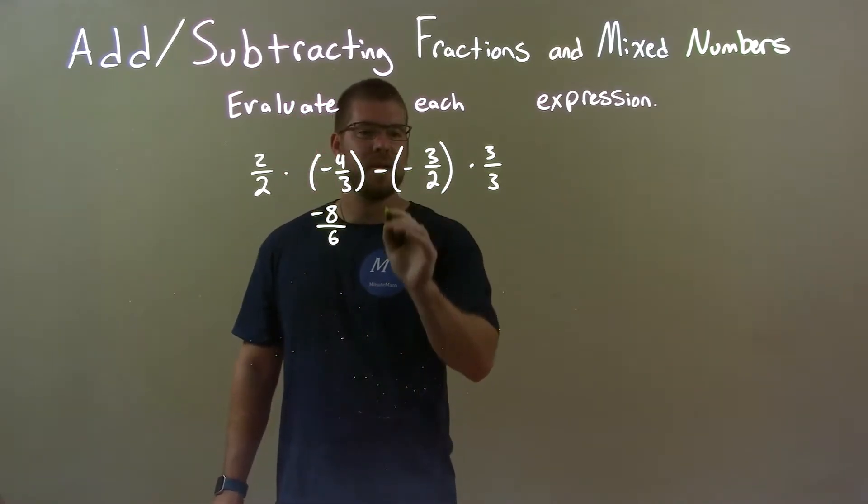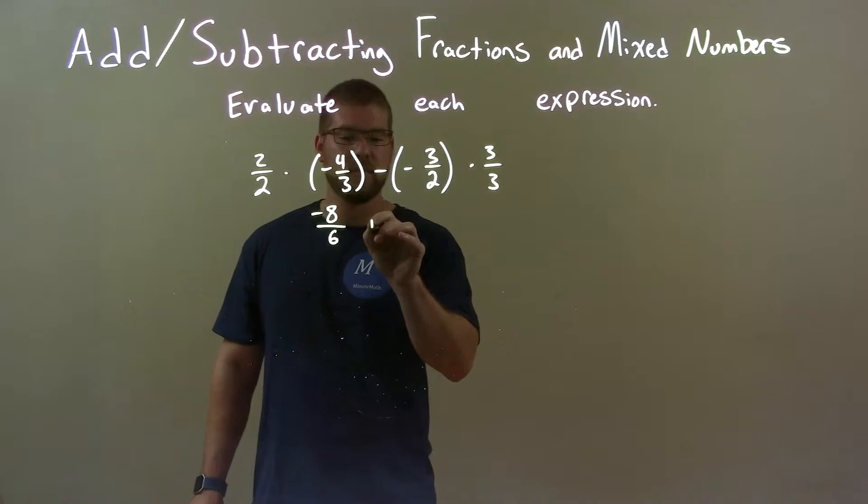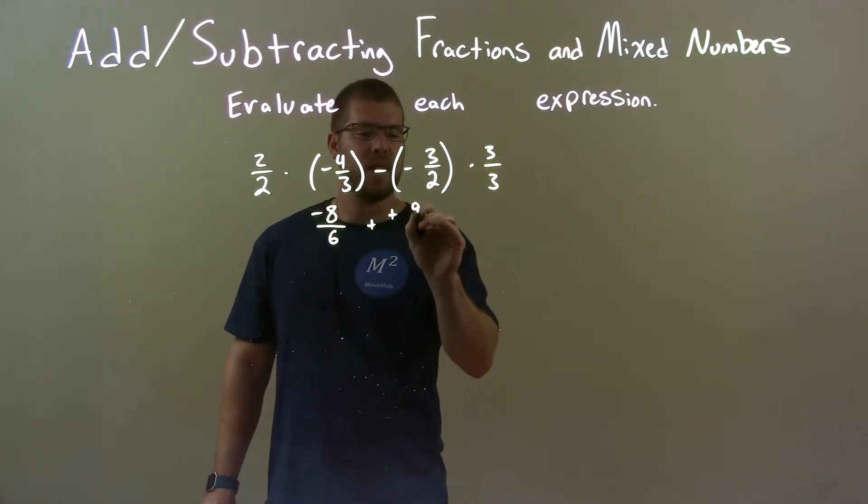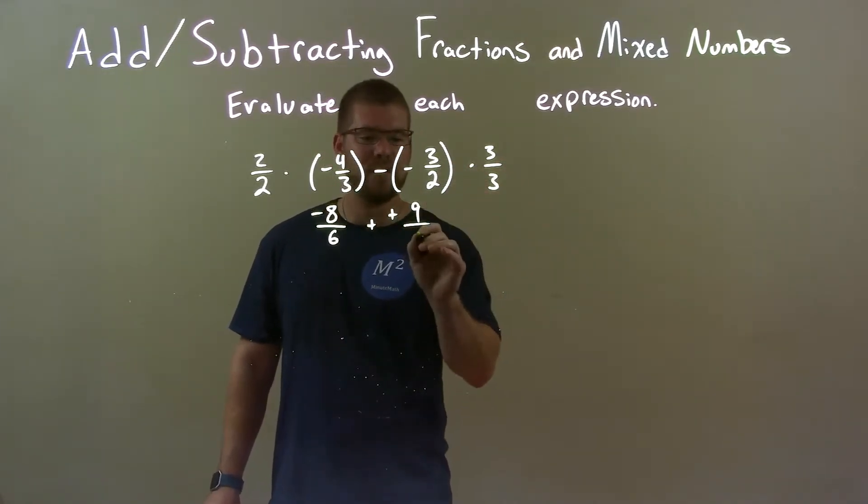Now, we're subtracting a negative, which is the same thing as adding a positive. So, let's do that plus a positive. Three times three was nine, or is nine, and three times two is six.